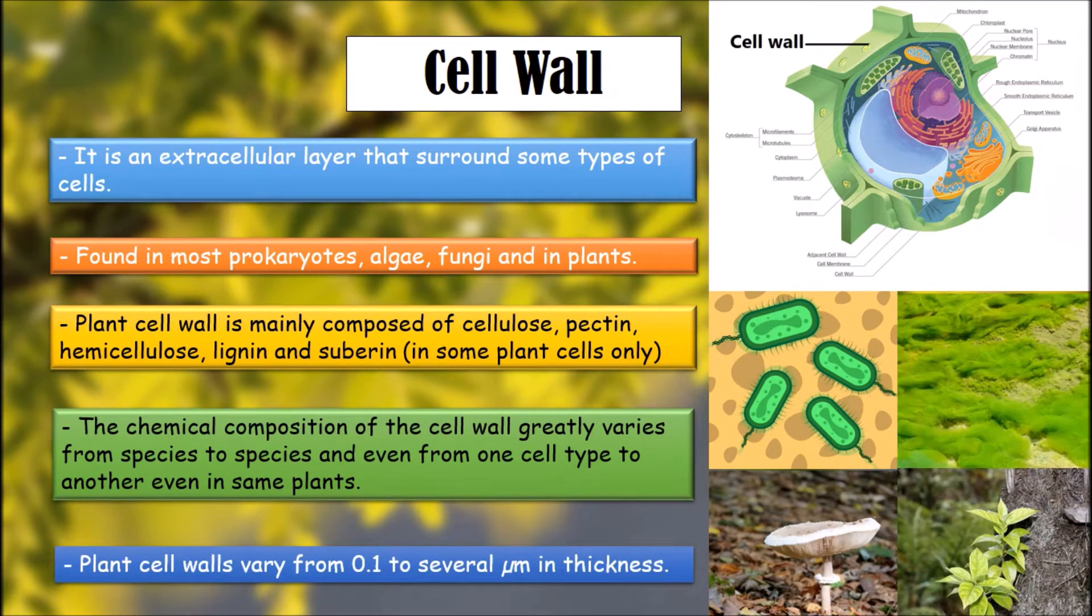However, prokaryotes, fungi, and some protists also have a thin and flexible cell wall. Plant cell wall is generally made up of cellulose, pectin, hemicellulose, lignin, and suberin.